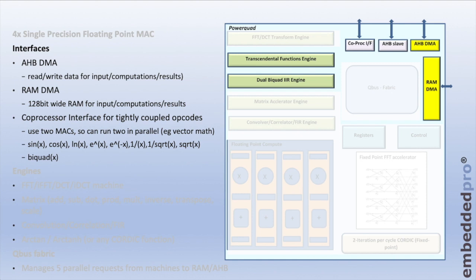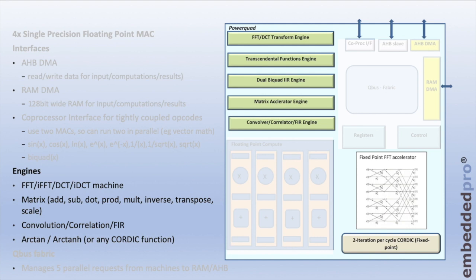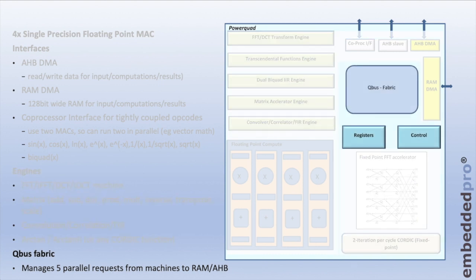Our main topic today is the coprocessor interface, used for tightly coupled opcodes. Simple operations like sine, cosine, natural log, exponent, inverse exponent, square root, inverse square root, or a bi-quad can be done directly through it, making use of the transcendental function engine and the dual bi-quad engine. The Power Quad also implements accelerators for FFT, inverse FFT, discrete cosine transform, inverse DCT, a matrix engine, convolution and correlation, an FIR engine, and a CORDIC engine primarily for arctan and hyperbolic arctan. The QBus fabric manages requests from engines to and from RAM and the AHB bus and supports five parallel requests.